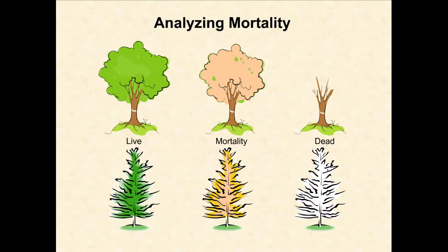When we go out to a plot, we record three different things — not even part of the national protocol, but something we add on in the Interior West. We record whether trees are live or dead, and for dead trees, we record whether it's recent mortality or old standing dead. The crews are pretty good at this — we allow a five-year window for what we call recent mortality. As I go through these bar graphs, I'm breaking out old standing dead versus recent mortality trees.